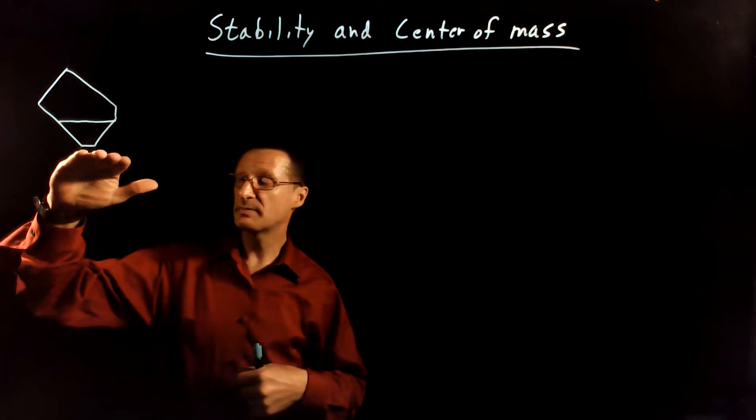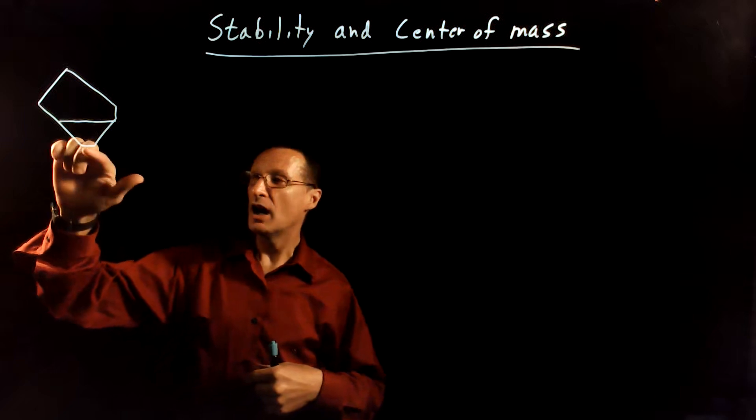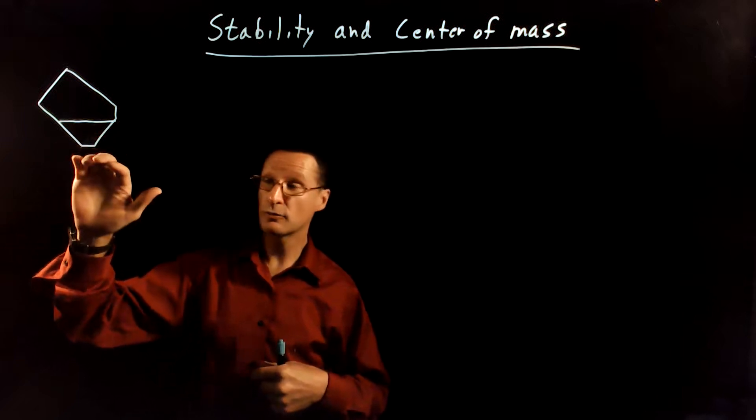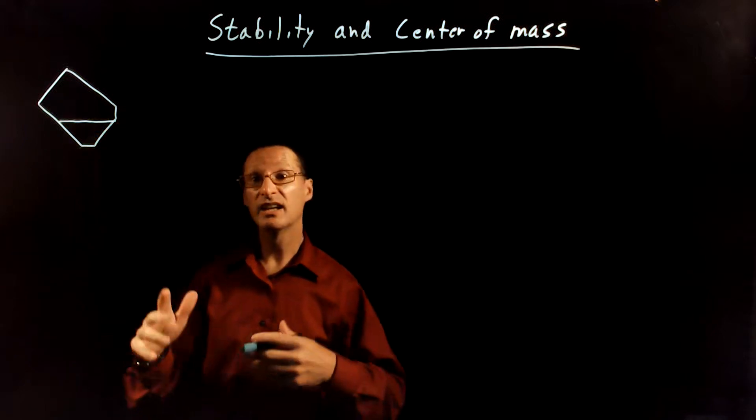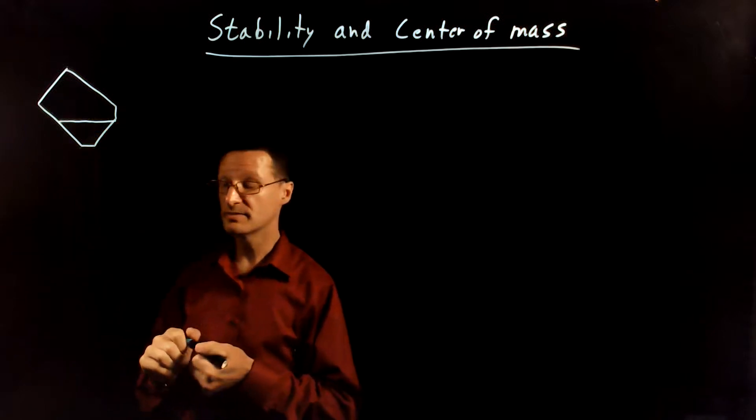So in a previous video, we talked about how you can balance a Coke can between two support points on the rim here, as long as the center of mass is between those two support points. Let's talk about why that works in terms of torque.